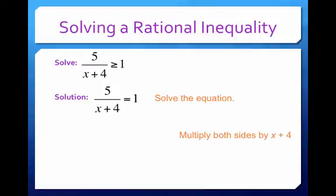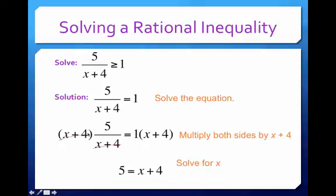I'm going to multiply both sides by x plus 4. Some of you refer to this as cross multiply, but I'm multiplying both sides by x plus 4, so they cancel on the left. This leaves me 5 equals x plus 4, and I need to solve this for x.